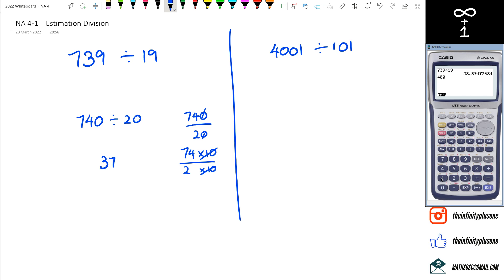So I've got 4001 divided by 101. All right, we got 39.61. So I'm going to write down 4001 as close to, well I'm going to put it as 4000, and 101 I'm going to put it as 100.